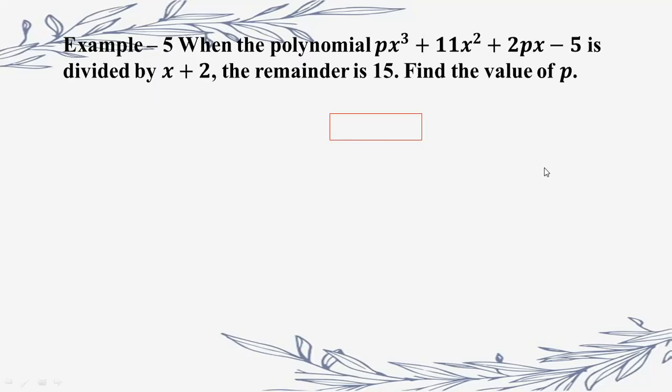Another problem is number five. One of the polynomials — let me get a name. The polynomial is pH squared plus 11p plus 2pH minus 5.